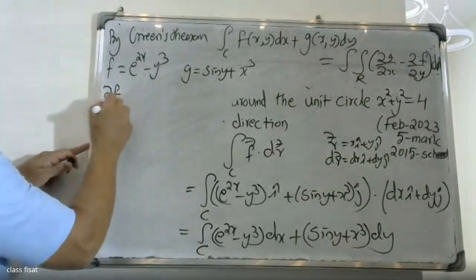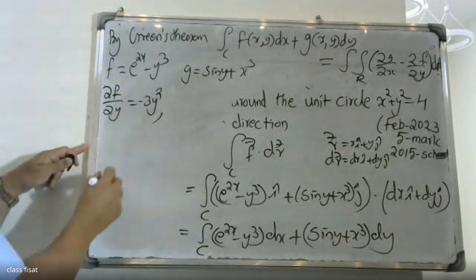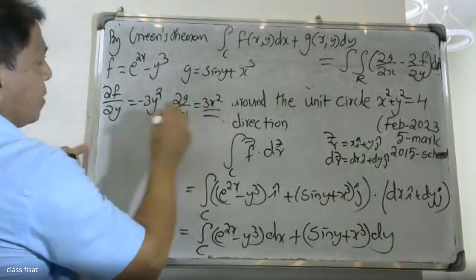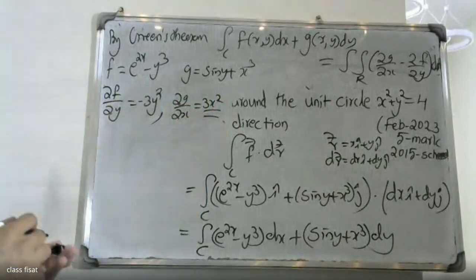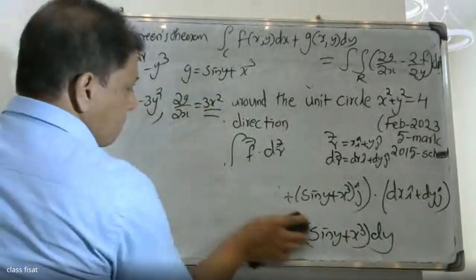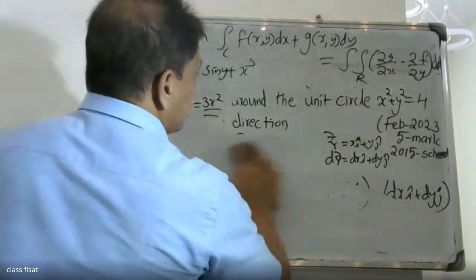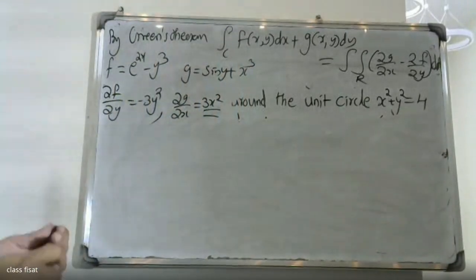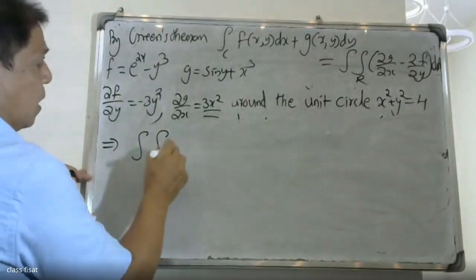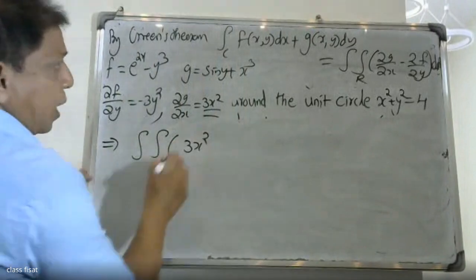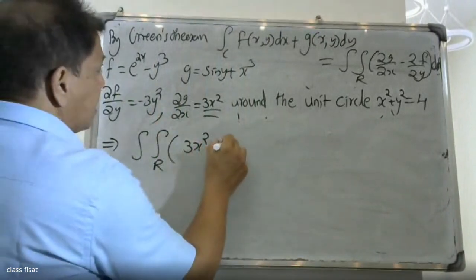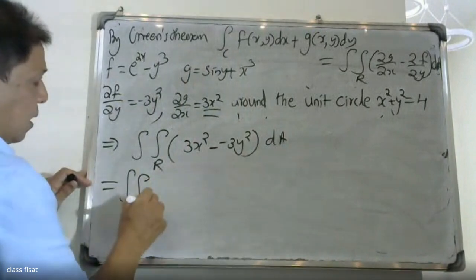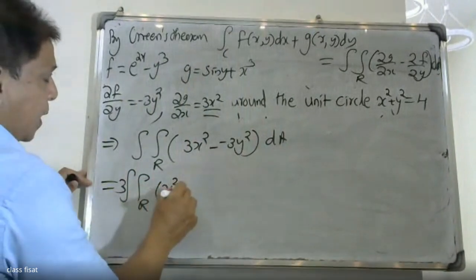Here ∂F/∂y equals minus 3y². For G(x,y), partial differentiating gives ∂G/∂x equals 3x². Substituting, the double integral over R becomes: ∂G/∂x minus ∂F/∂y equals 3x² minus (minus 3y²), giving double integral R of (3x² plus 3y²) dA.